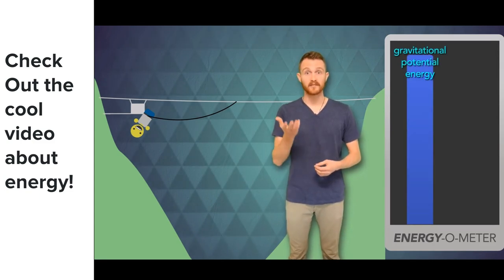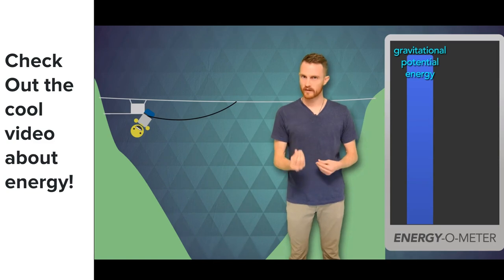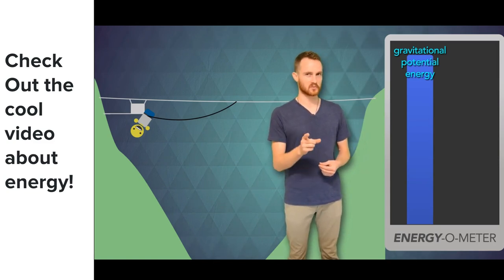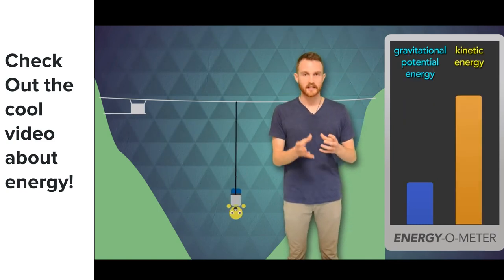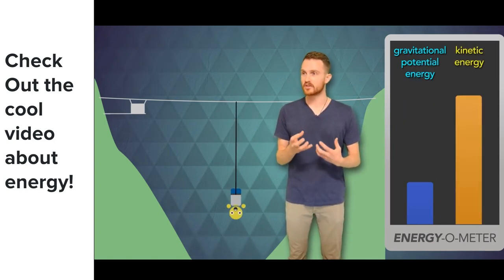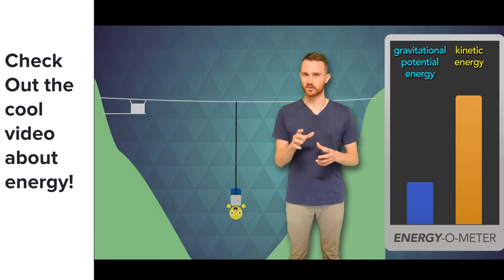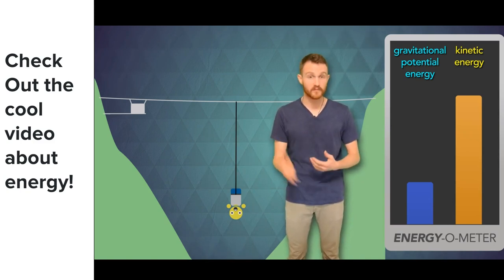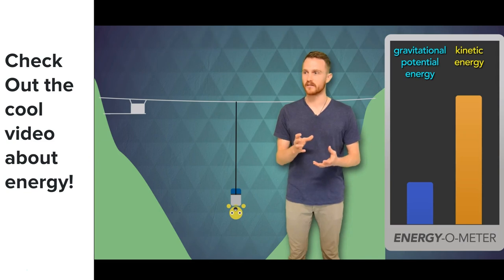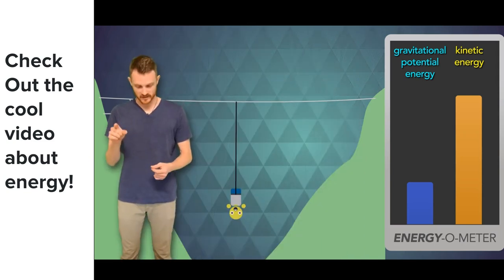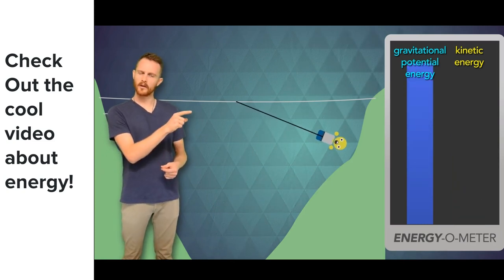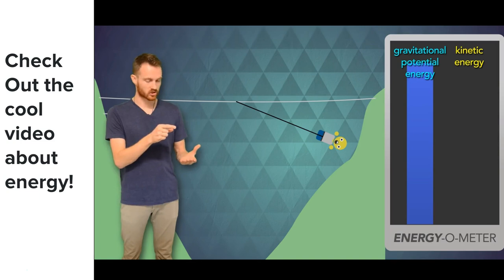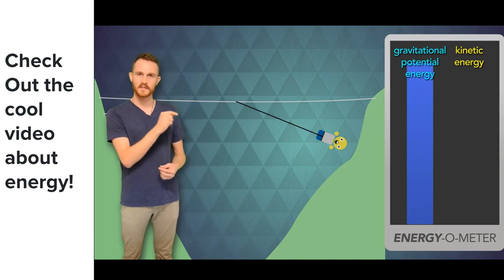Well here at the top I have what is called gravitational potential energy. I'm located above the earth which has a strong gravitational pull on me. I have the potential to move. Now as I'm let go I start moving and that gravitational potential energy changes into what's called kinetic energy. Anything that's moving has kinetic energy. The faster I go the more kinetic energy I have. Now as I swing past the bottom and I start going back up I slow down and that kinetic energy is changed back into gravitational potential energy.